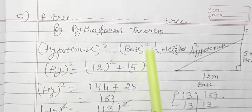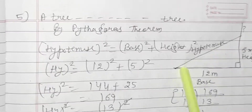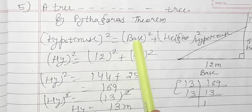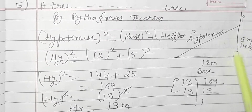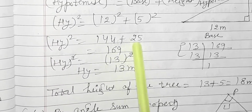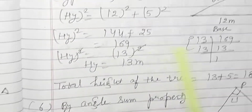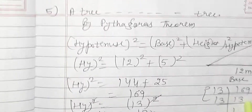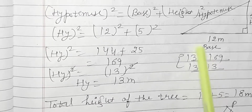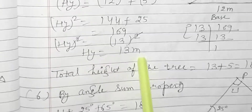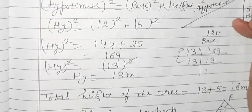I will use Pythagoras theorem: hypotenuse² = base² + height². The hypotenuse is unknown; base is 12 m and height is 5 m. 12 × 12 = 144, and 5 × 5 = 25. Adding: 144 + 25 = 169. Using prime factorization: 169 = 13 × 13. So hypotenuse = 13 meters.